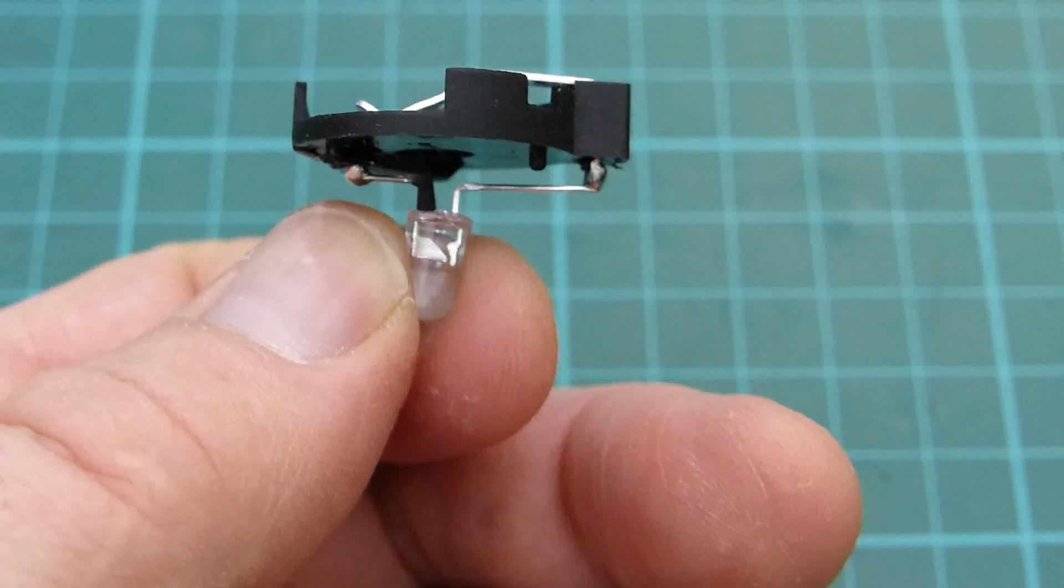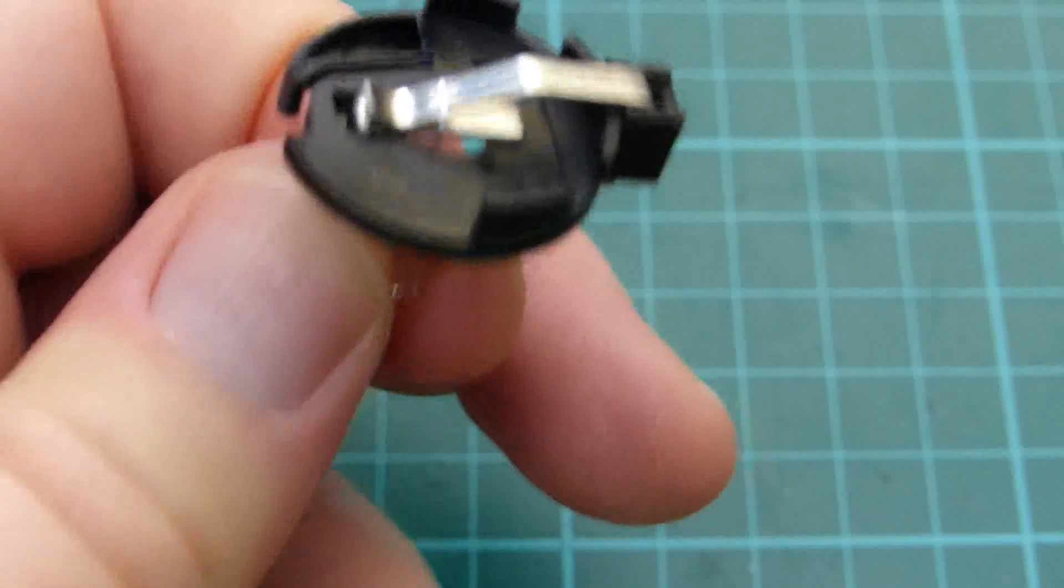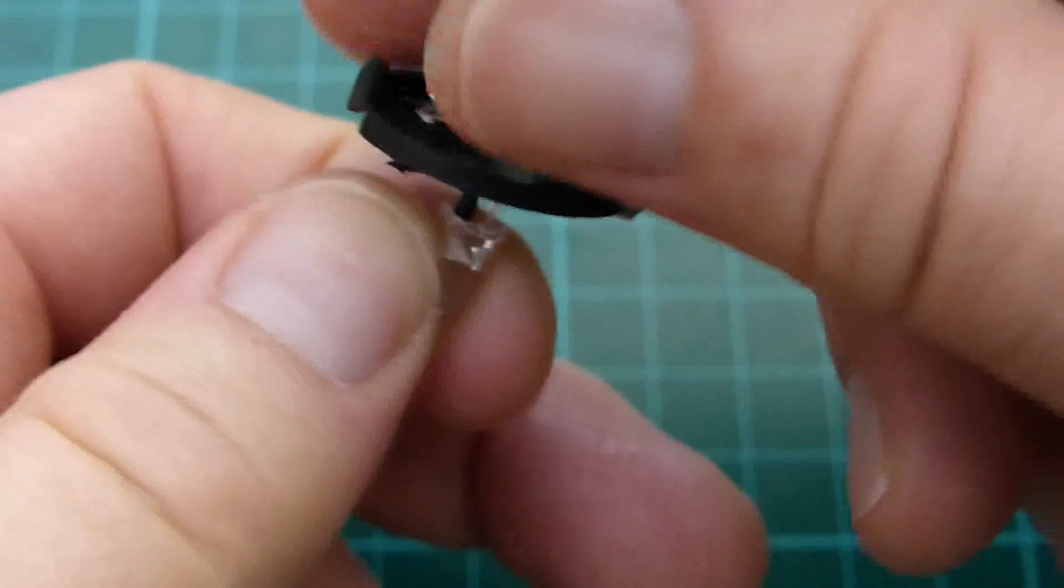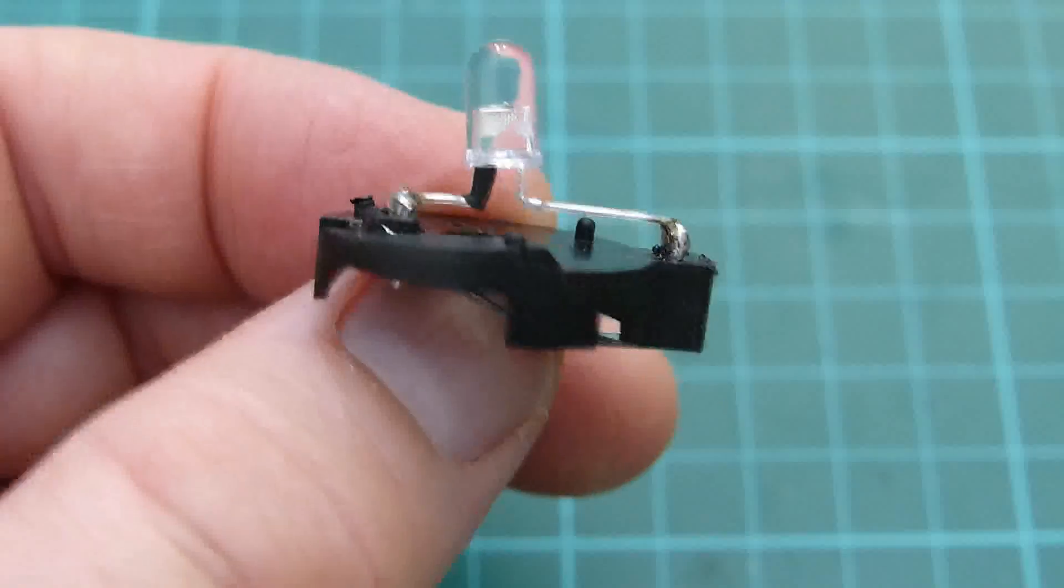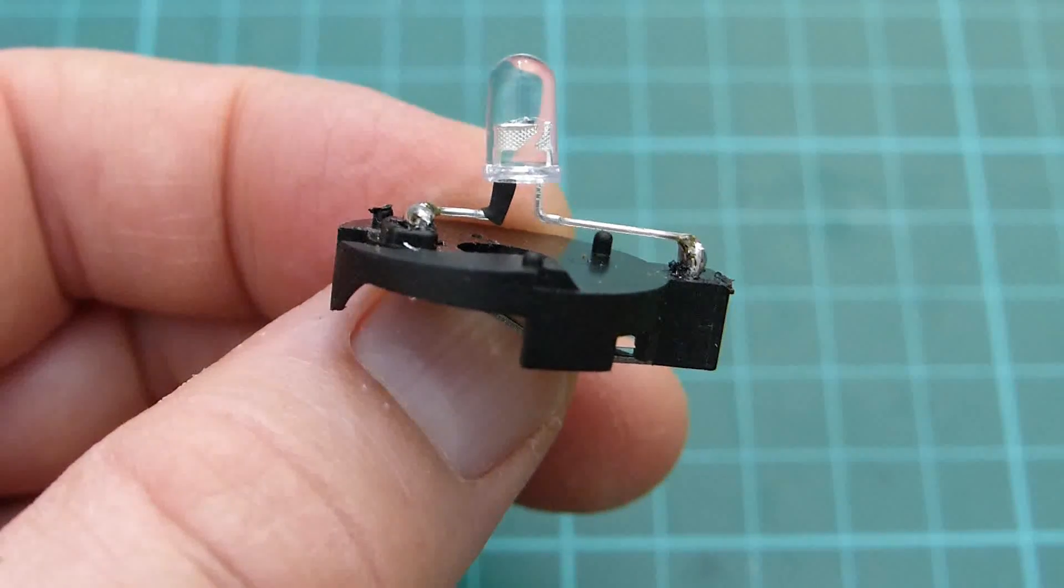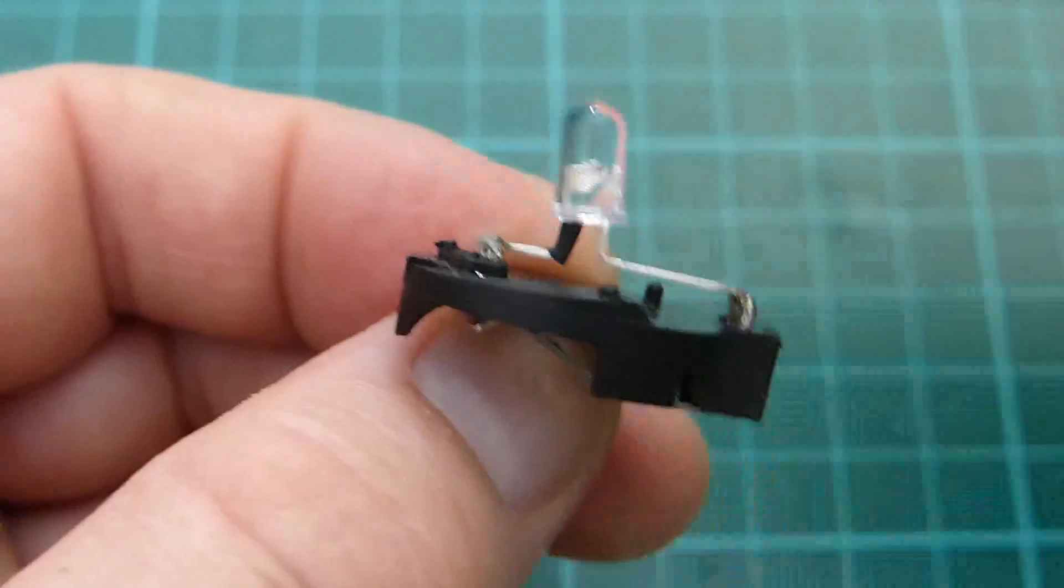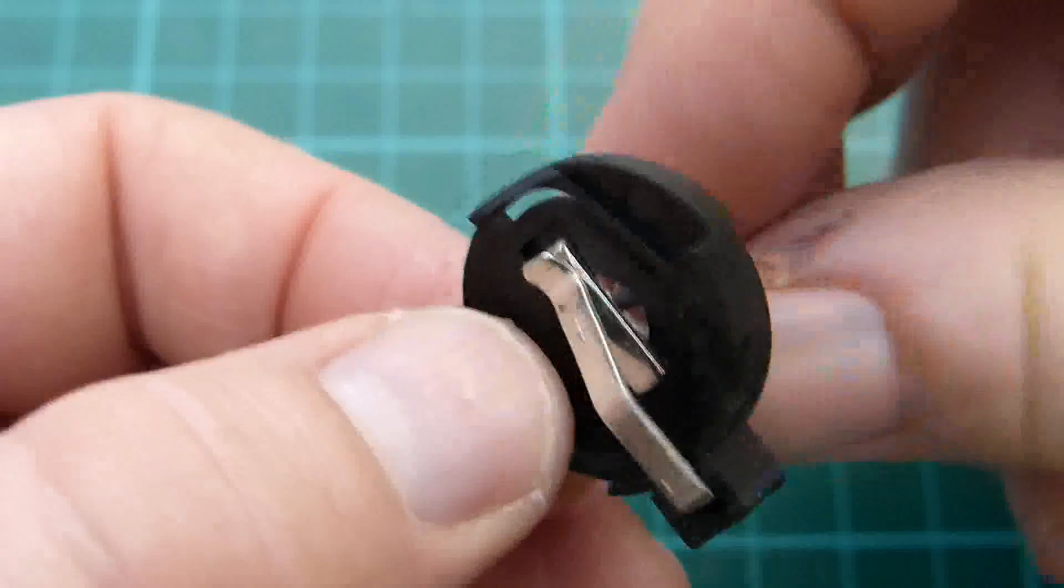The next task was to solder the LEDs to the battery holders. The long lead on the LED is soldered to the positive side of the battery holder and the short lead to the negative side. The LED is located directly below the hole in the base of the battery holder rather than centrally between the solder terminals.